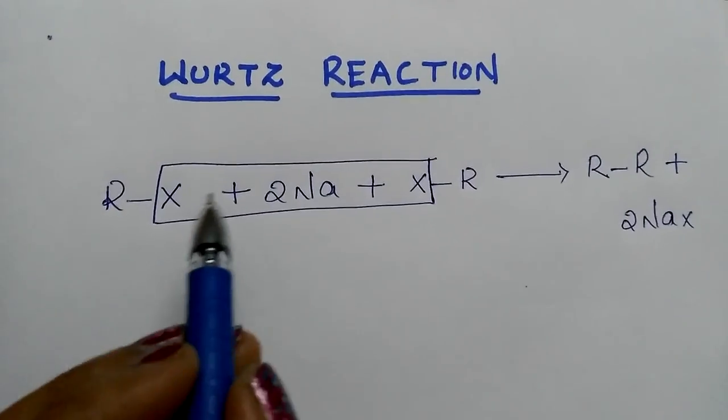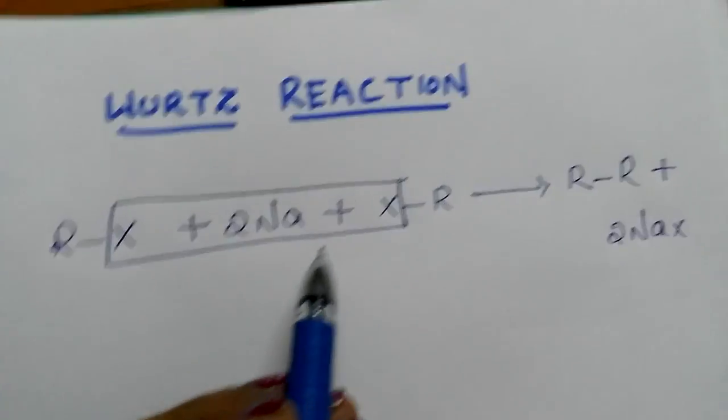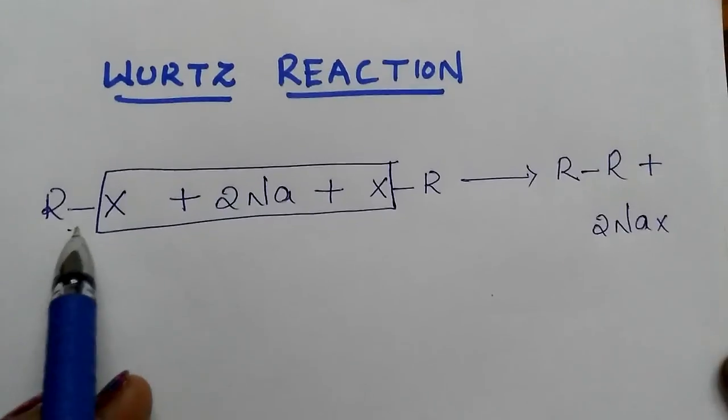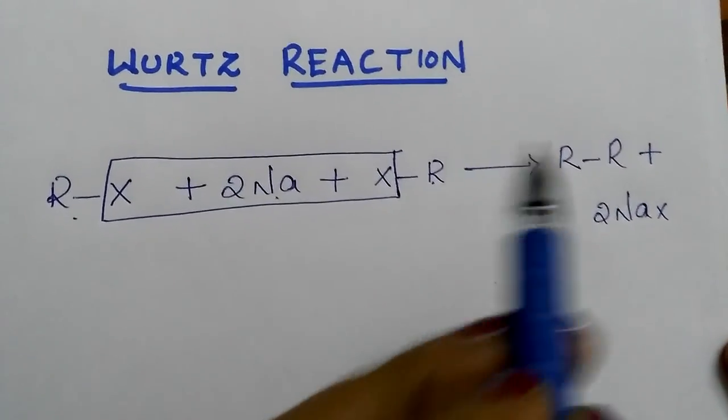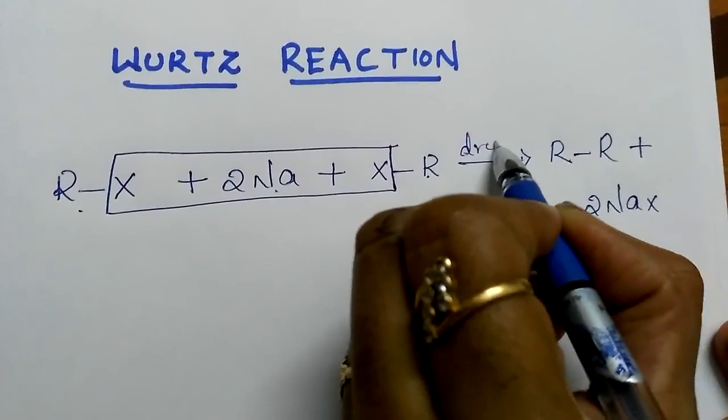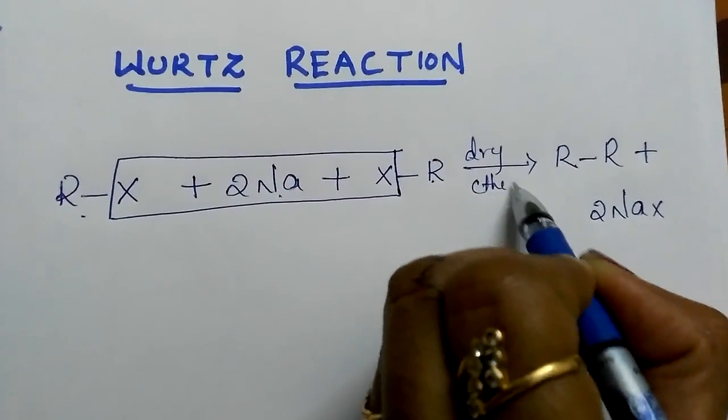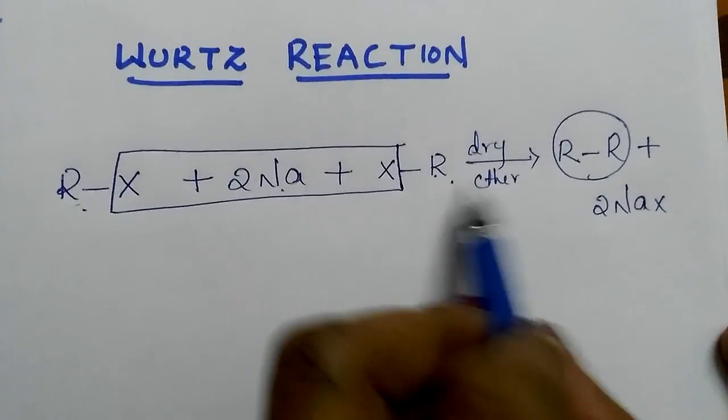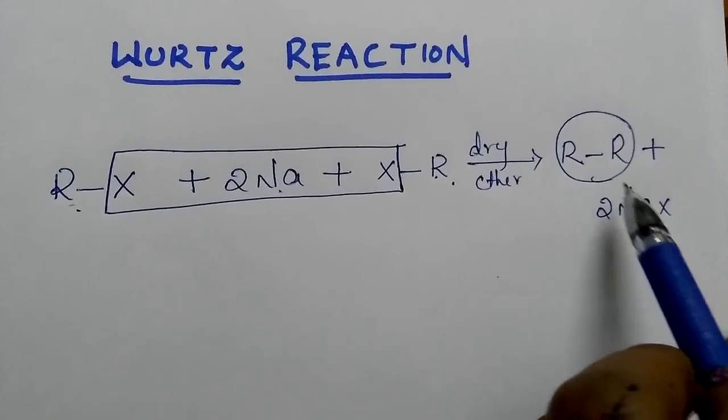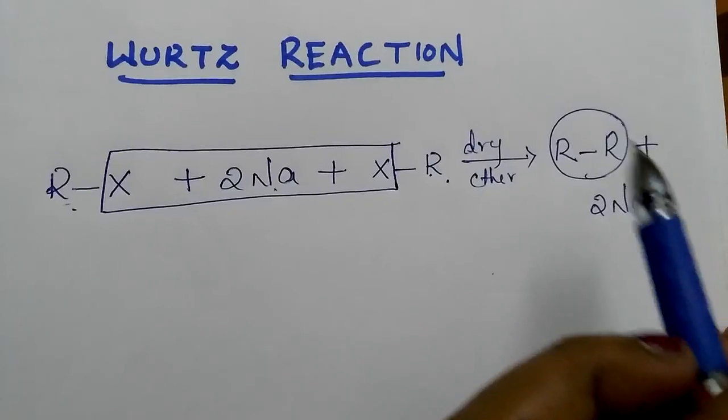It involves the interaction of two molecules of alkyl halides with metallic sodium in the presence of dry ether. It forms symmetrical alkane, means both R groups should be same and that too it contains even number of carbon atoms.